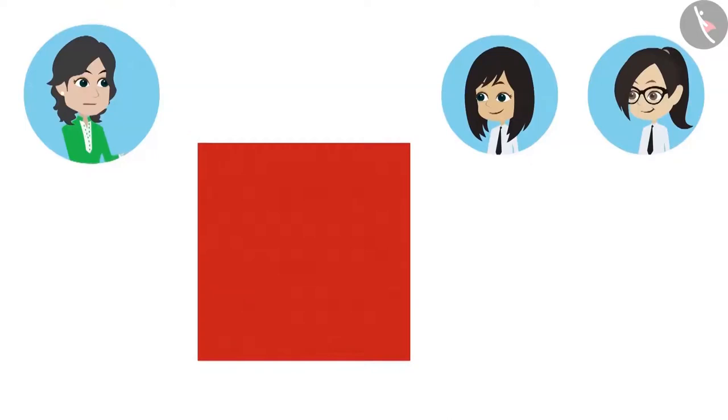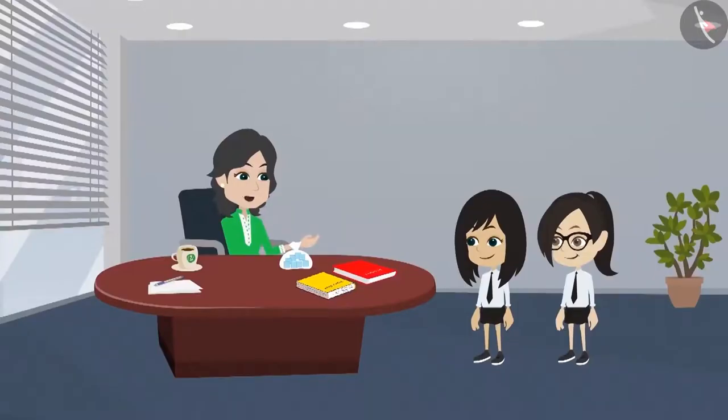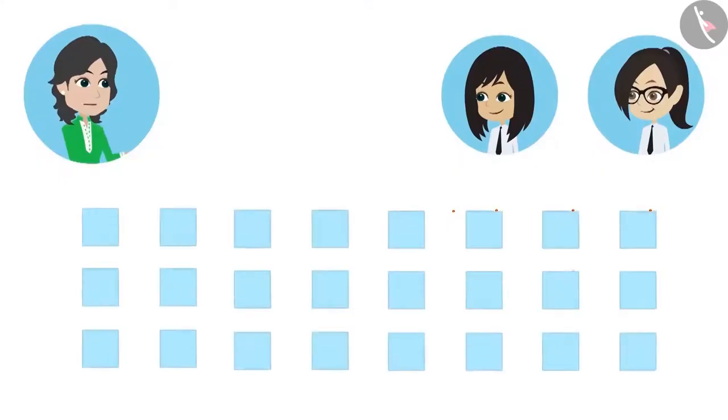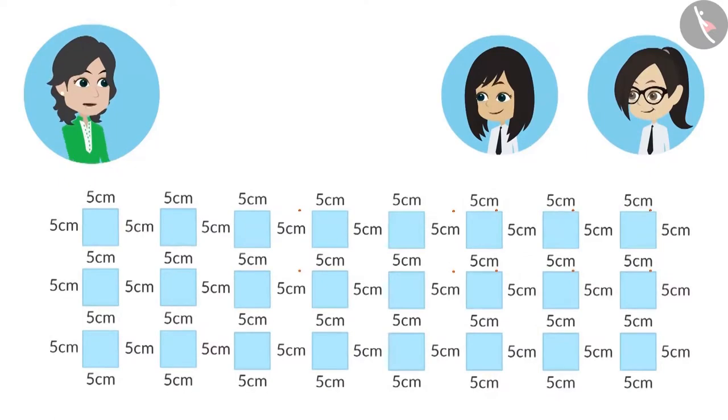For this purpose, we use square shaped pieces. You can also make these pieces using paper, cardboard or plastic. I have square shaped pieces made of plastic. All the sides of these pieces are 5 cm each.